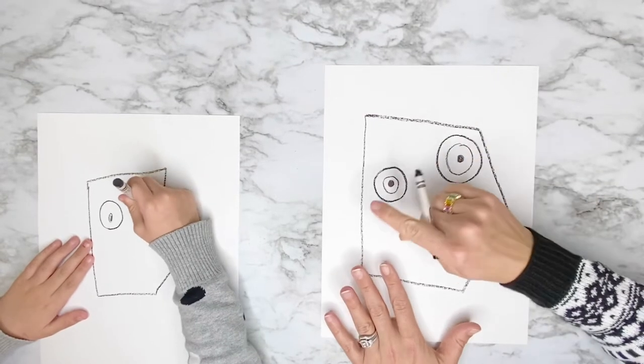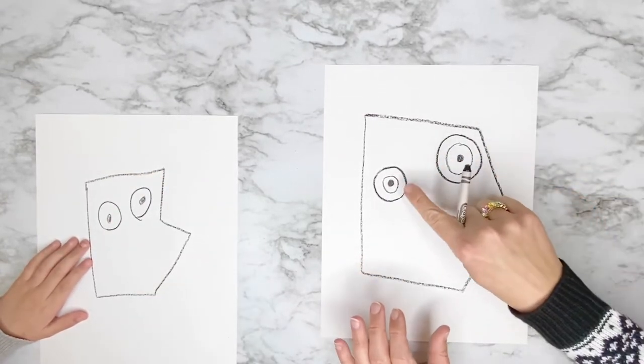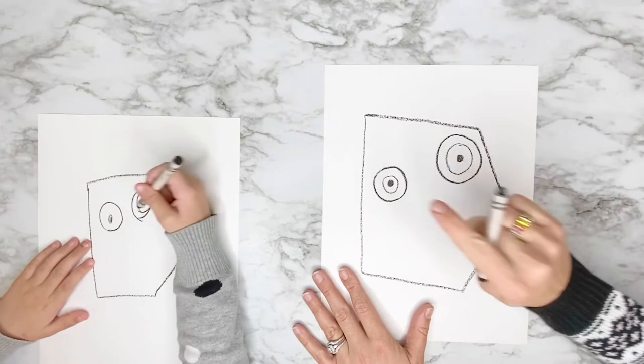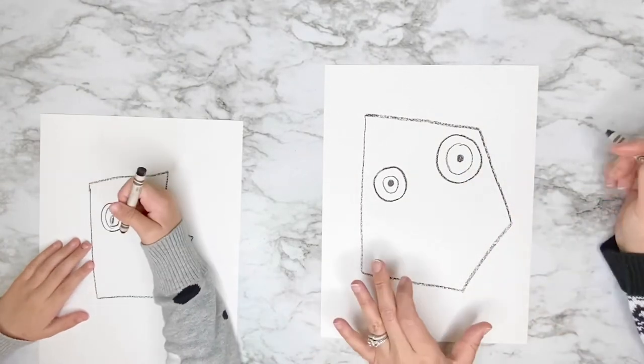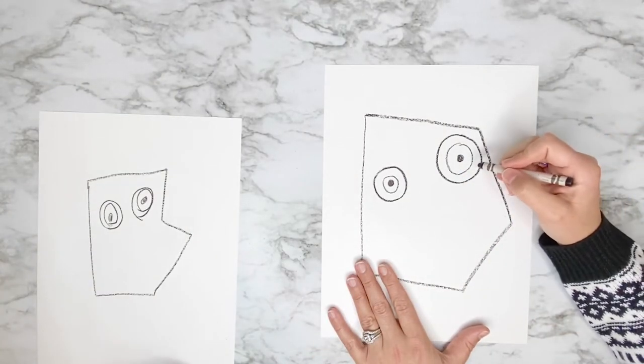And I'm leaving some space around so that I can color them in different colors because this is abstract, right? Now we're going to include a nose.